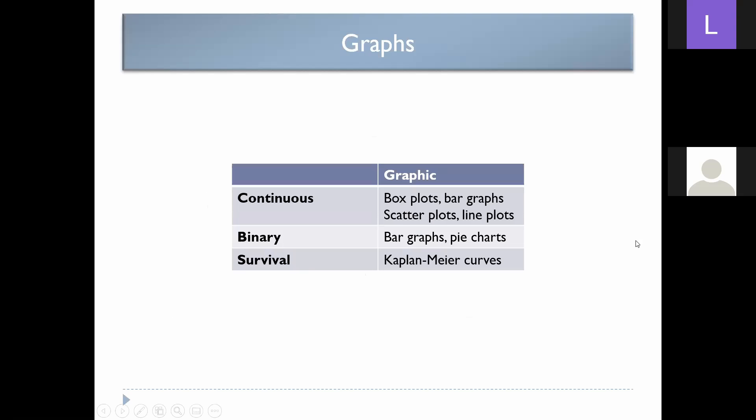Now I'll talk briefly about graphical statistics. People often forget the graphical statistics when writing the research analysis, thinking they'll just do the graphs later. But you may as well get that second paragraph in and describe how you're going to physically represent your data — a picture is worth a thousand words. For continuous data, you show it through box plots, bar graphs, scatter plots, and line plots. For binary data, you're often showing bar graphs or pie charts. For survival data, you're showing Kaplan-Meier curves.